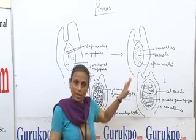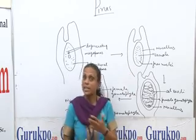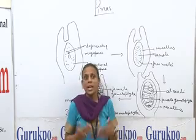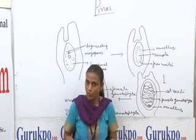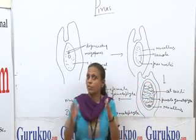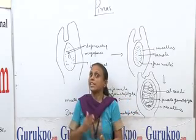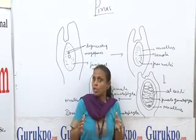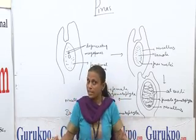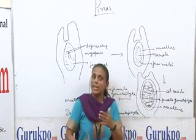Reproduction occurs by means of megaspores as well as microspores. Microspores give rise to the male gametophyte and megaspores give rise to the female gametophyte. The male cone consists of a central axis around which microsporophylls are arranged in a spiral manner.